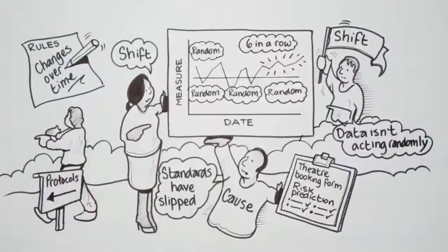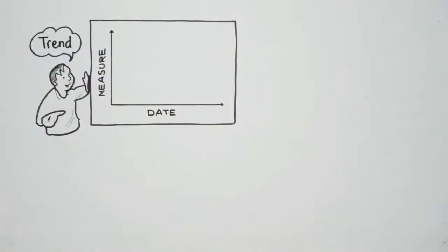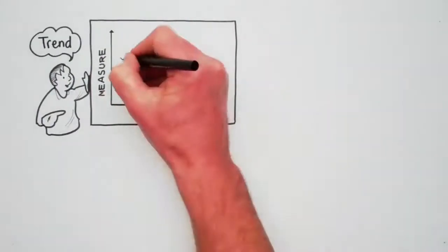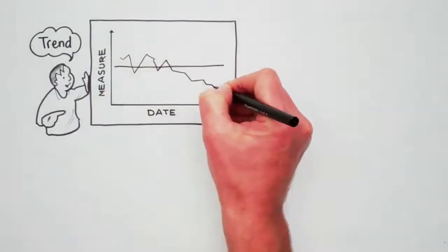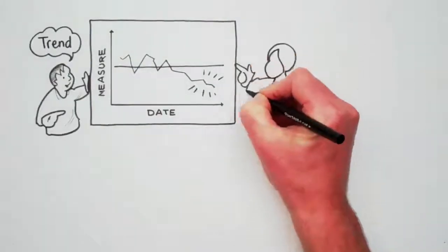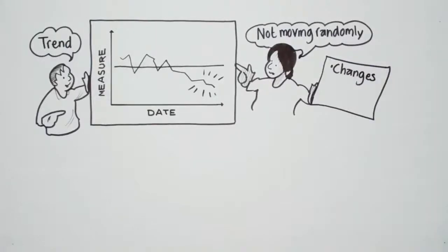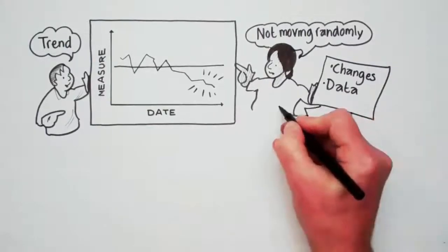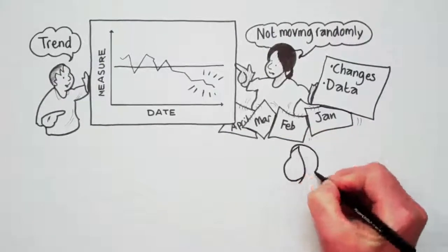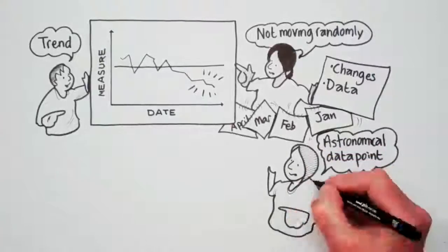The second thing to look for in your run chart is a trend. We are looking for a statistical trend in the data, which is to have five data points going in one direction, either going up or constantly going down. This also shows the data isn't moving randomly and it may be some changes you've made are making the data change, hopefully improving incrementally month-on-month.